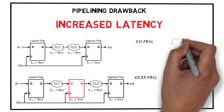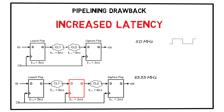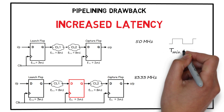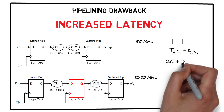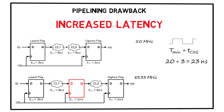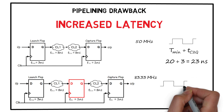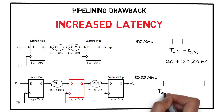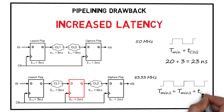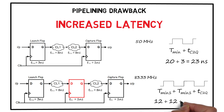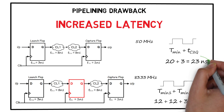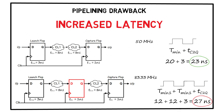Although we increased the maximum operating frequency, there is a drawback: increased latency at the final output. If we operate both circuits at their maximum frequencies — 50 MHz for the original and 83.33 MHz for the new one — the original circuit produces the final output after one clock cycle plus clock-to-Q delay, that is 23 ns. The new circuit takes two clock cycles of 12 ns each plus 3 ns, totaling 27 ns. So the final output is delayed due to pipelining.